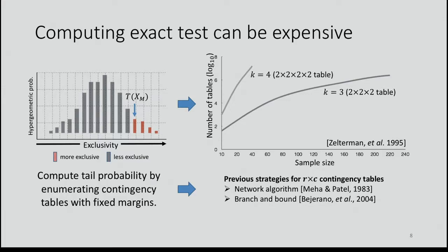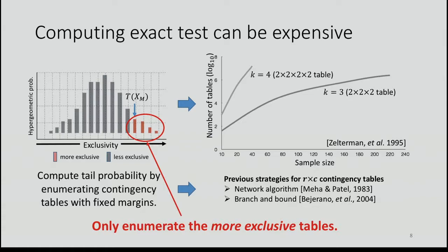Computing the tail probability can be expensive. Given our observed value of T, we need to enumerate all contingency tables in the tail that have as much or more exclusivity and sum up their masses, conditional on fixed margins — which comes from conditioning on mutation frequency. Here I'm showing a figure from Zeltzman et al. plotting the number of tables of a certain size for different dimensional 2^K tables as sample size increases: it grows exponentially. While there's been previous work on R×C contingency tables, these are 2D, so less has been done for 2^K tables.